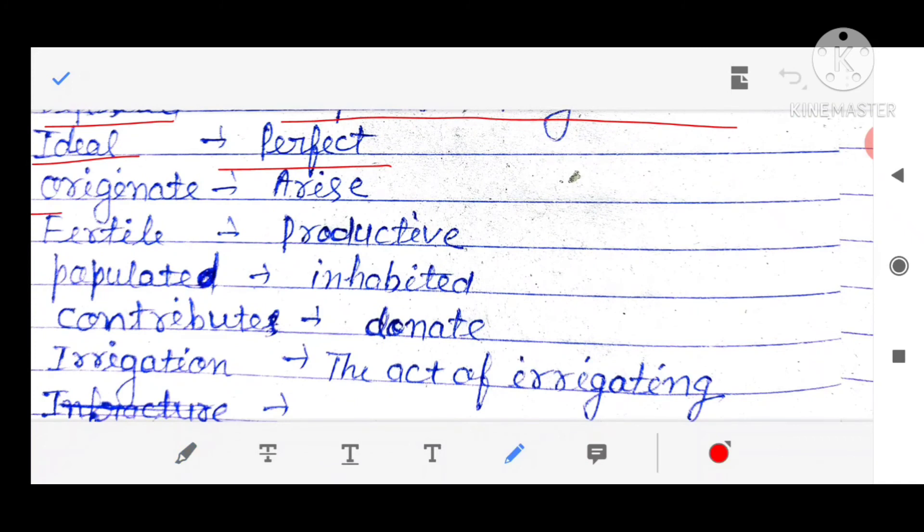Originate, arise, उत्पन्न होना. Fertile, productive, उपजाऊ. Populated, inhabited, मतलब बसा हुआ. Inhabited मतलब बसा हुआ.